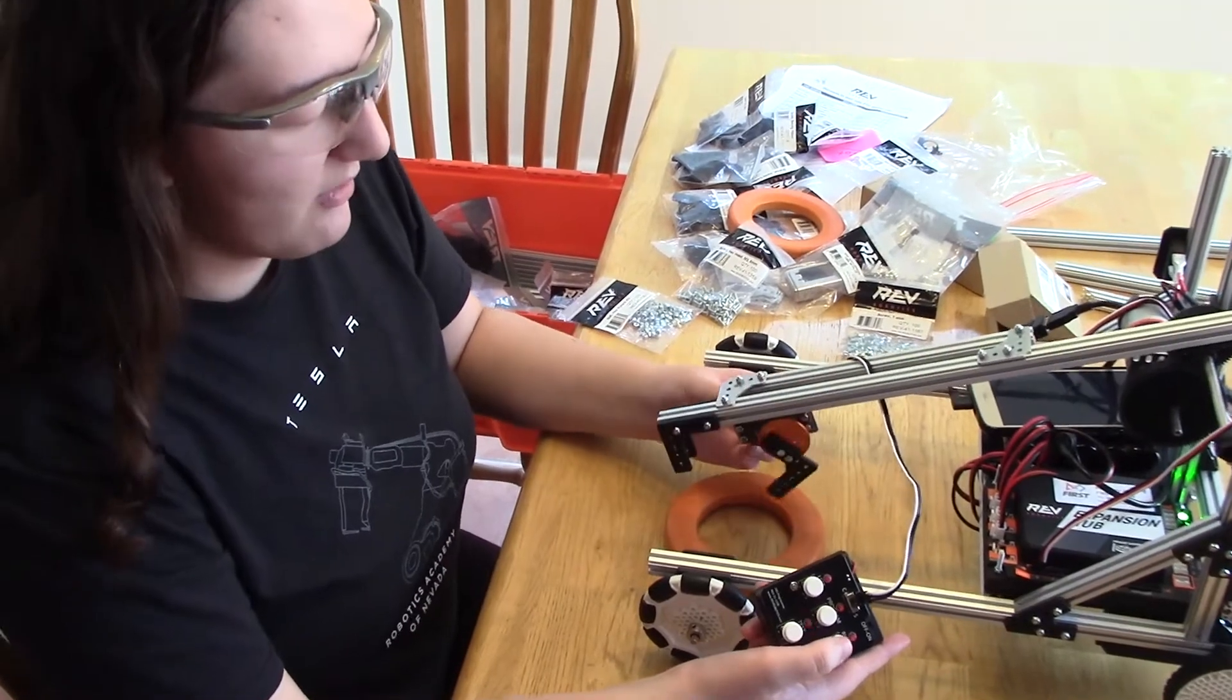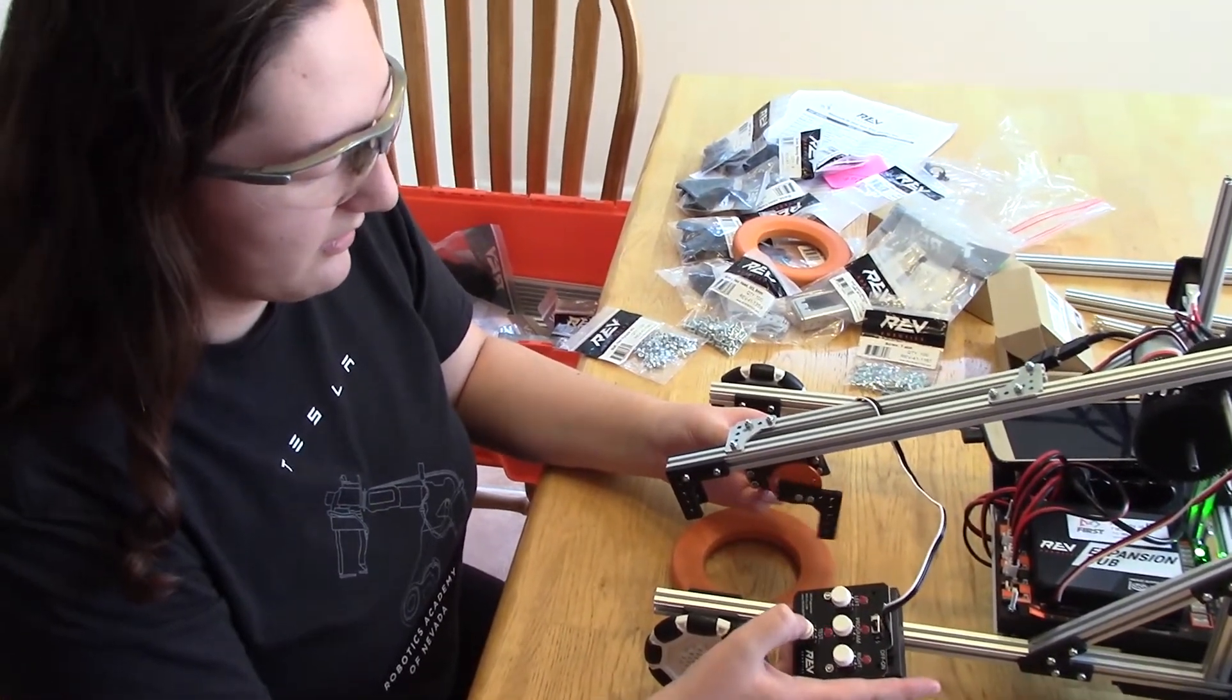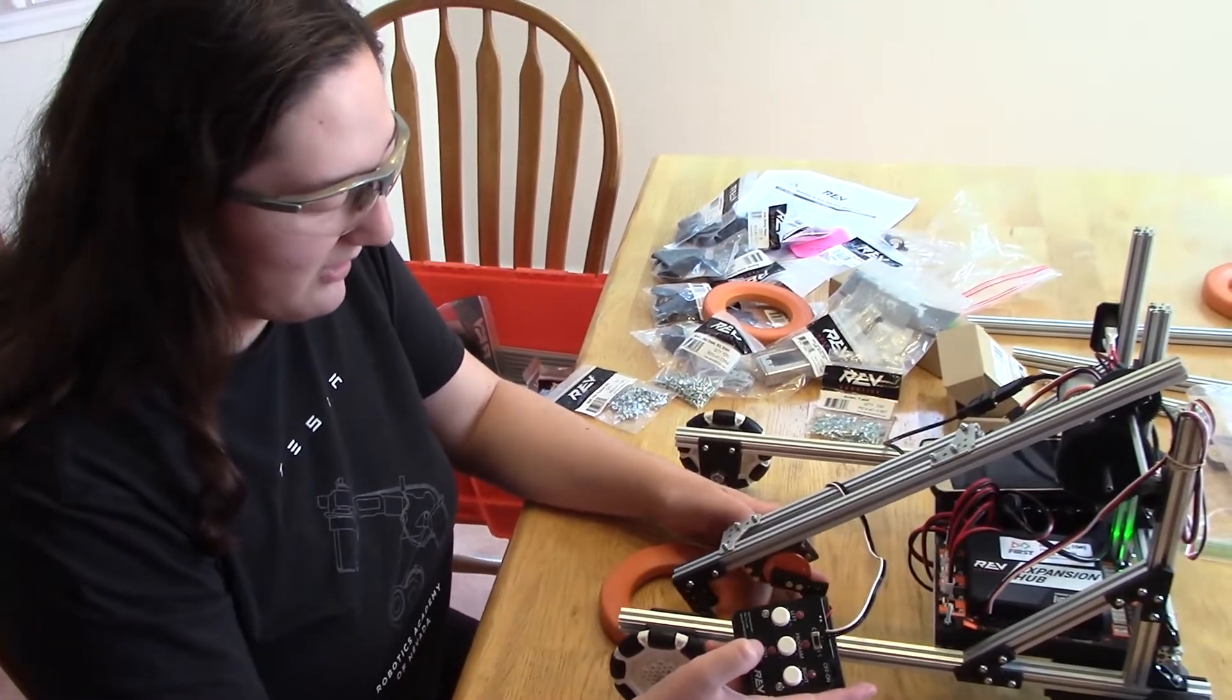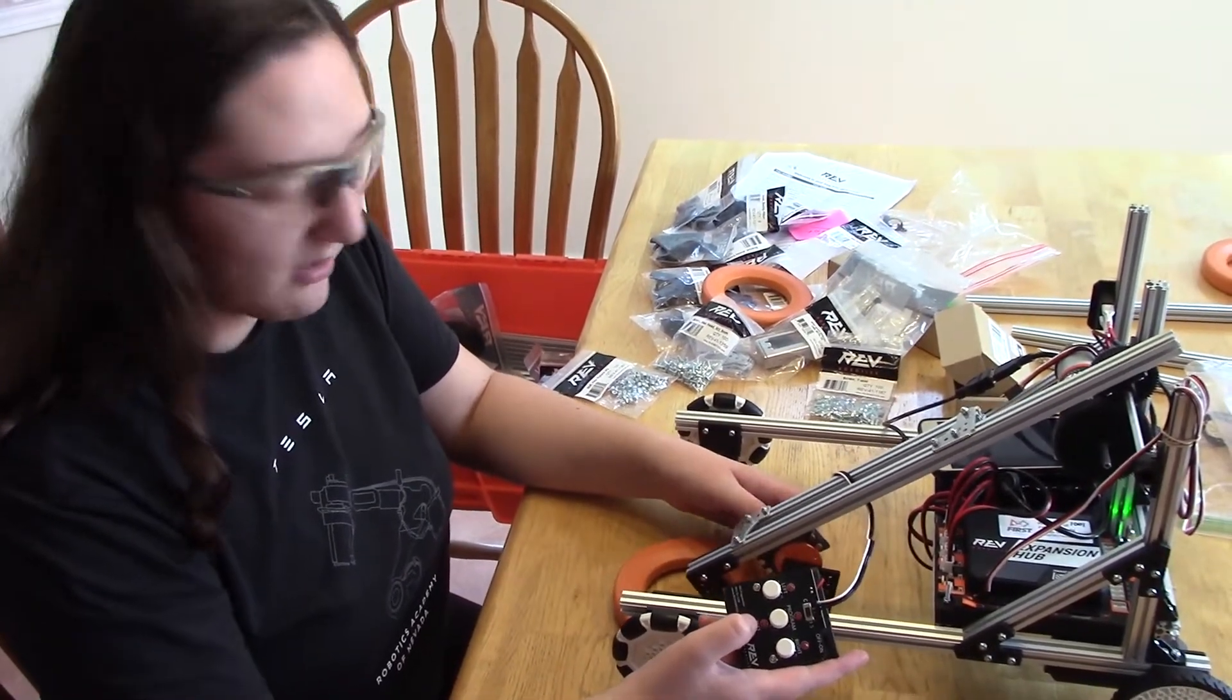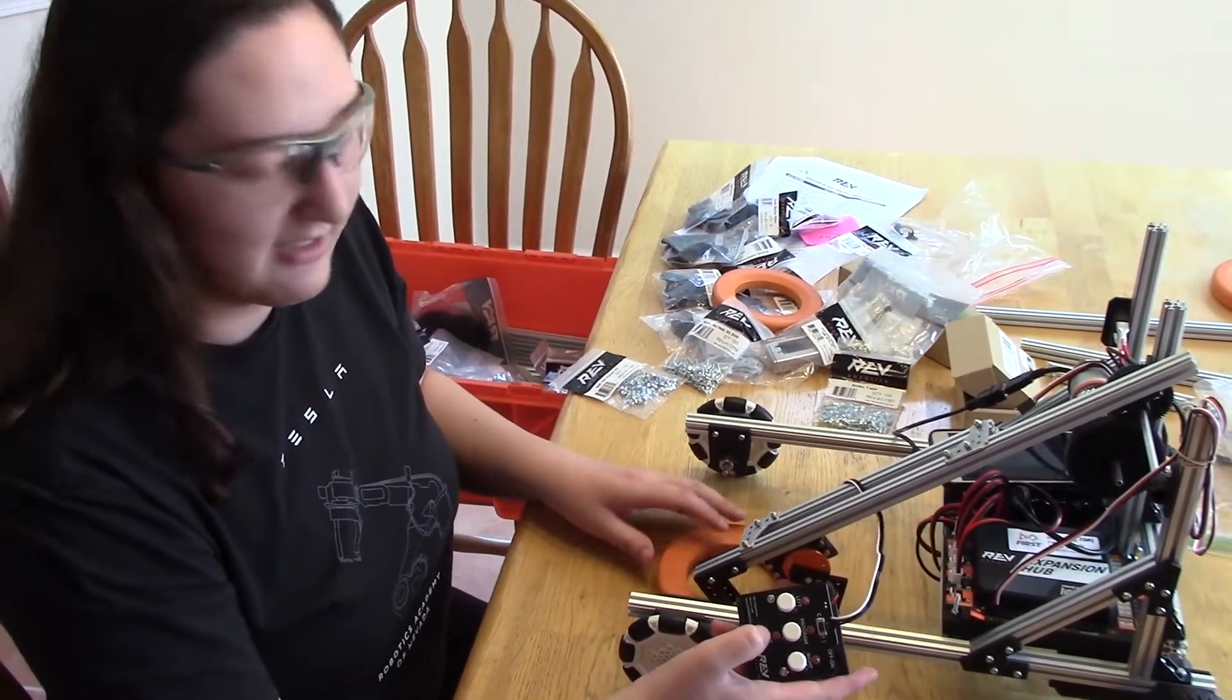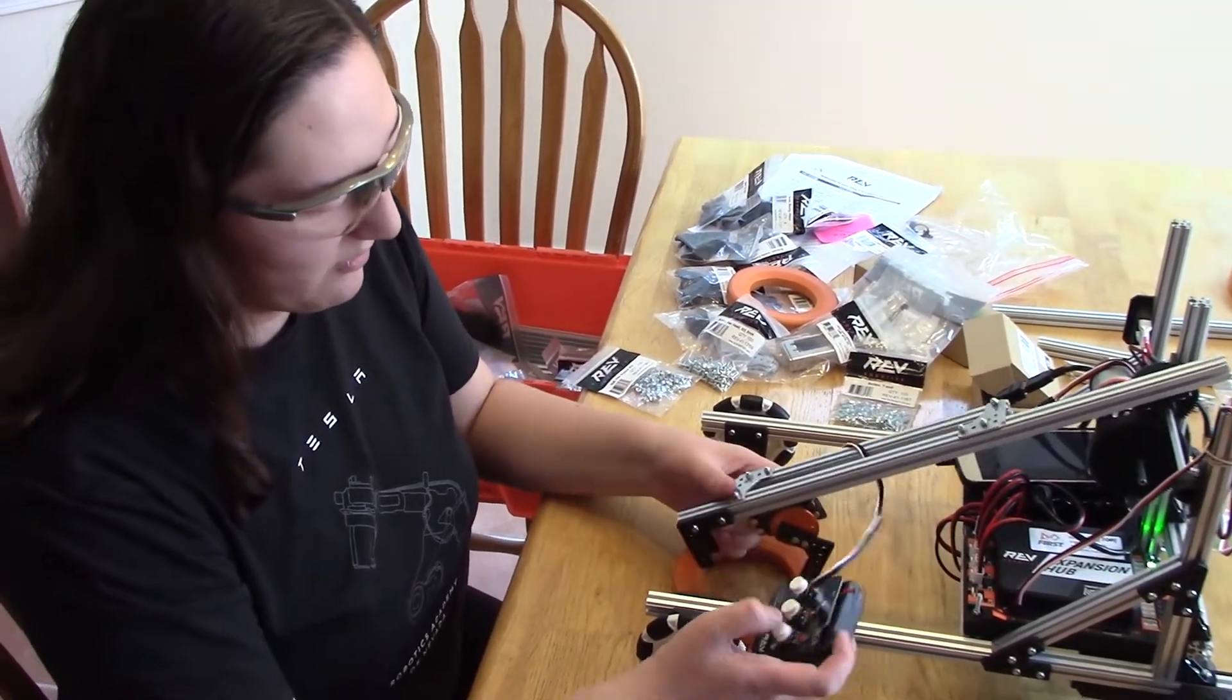An interesting thing about this claw design, I'm going to stop for a second so I can tell. The interesting thing about this design is that it doesn't have to be exactly right at the edge of the ring. It can actually be in any point of the ring and still be able to grab it. So I'm going to demonstrate that real fast.